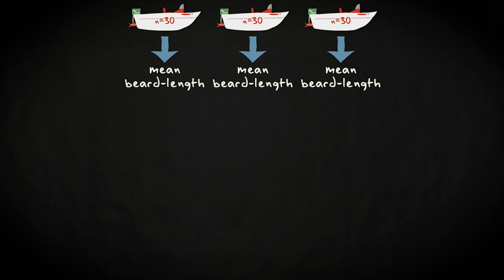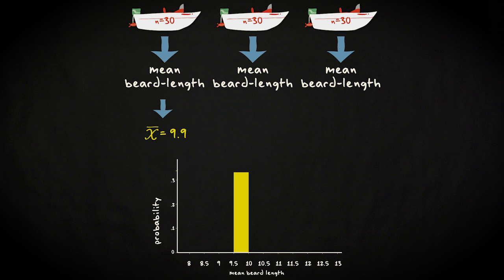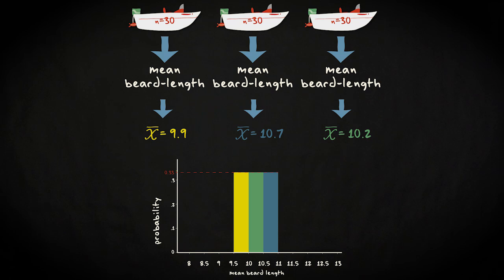Now imagine you look at 3 boats. This is what the probability distribution could look like. In one boat, the mean beard length is 9.9 mm. In one, 10.7, and in one, 10.2. We have 3 boats, so every mean has a probability of 0.33.